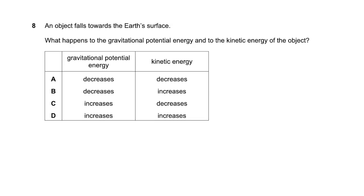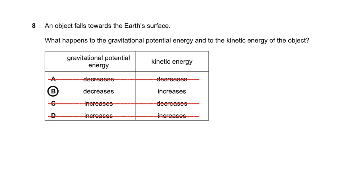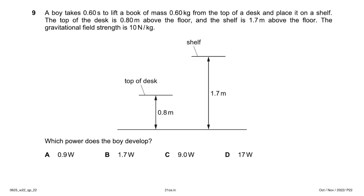An object falls toward Earth's surface. What happens to its gravitational potential energy (GPE) and kinetic energy (KE)? GPE = mgh; as h decreases, GPE decreases — so options C and D (GPE increases) are wrong. As the object falls, velocity increases, so KE = ½mv² increases. Option A (KE decreases) is also wrong. The remaining option B is correct: GPE decreases and KE increases.